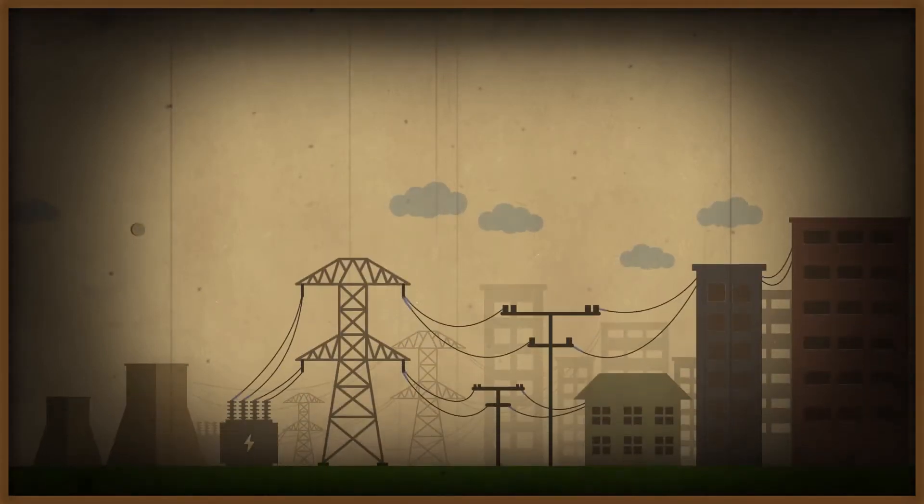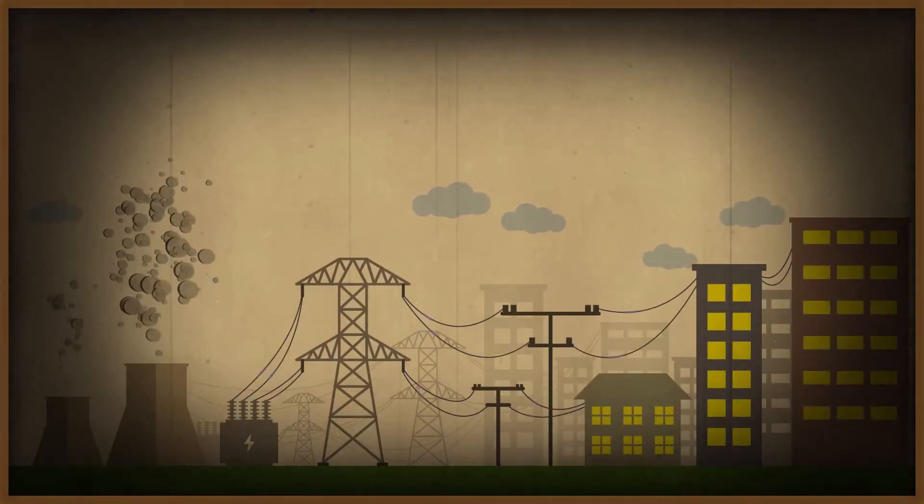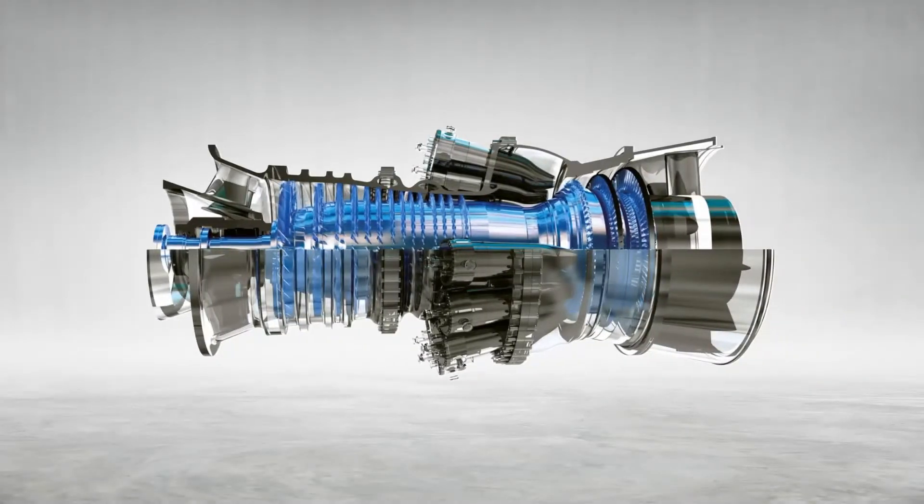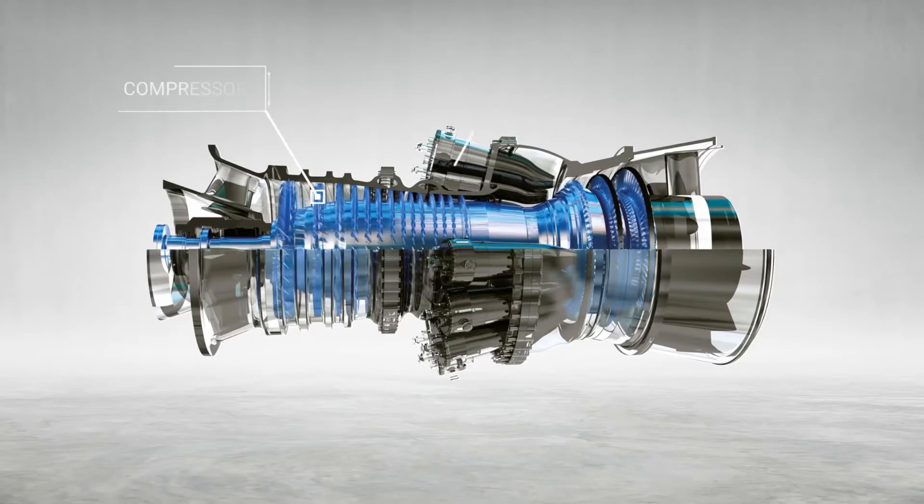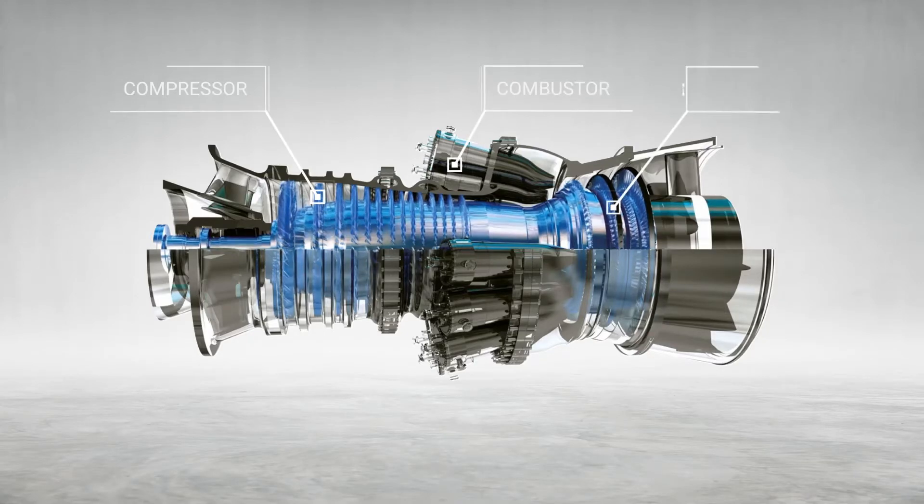They are ideal for peak power because they can produce energy almost instantly. And here's a quick look at how they work. A gas turbine usually consists of three main parts: compressor, combustor, and turbine.